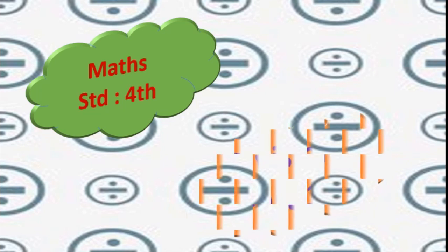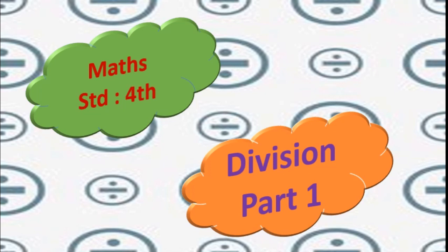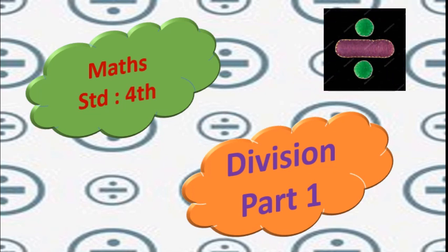Today's subject is Maths of Standard 4th and the name of the chapter is Division Part 1. You know how to divide numbers — you have learnt this in Standard 3rd. This is the symbol we use for division: one horizontal line with two dots, one above the line and one below. We will take a quick recap of Standard 3rd and then move to today's Standard 4th portion.